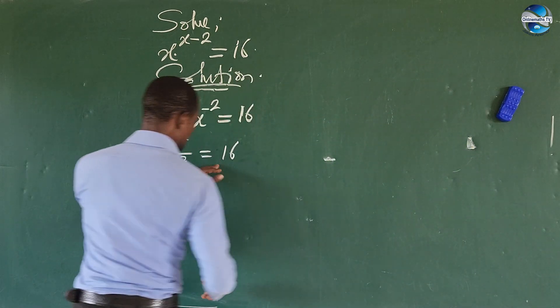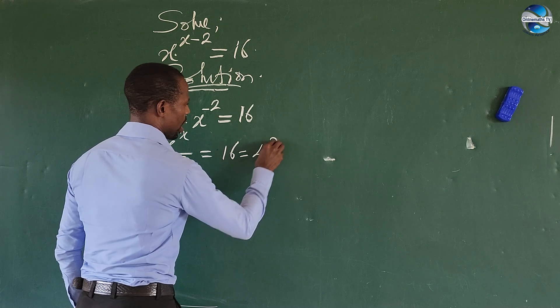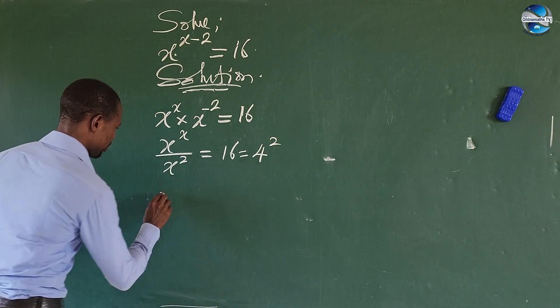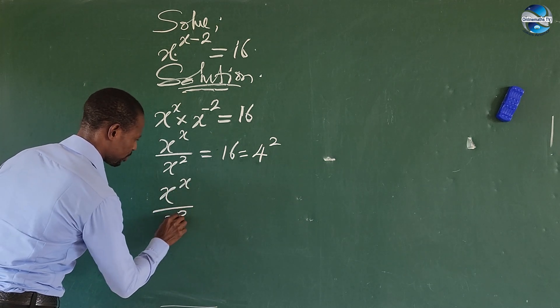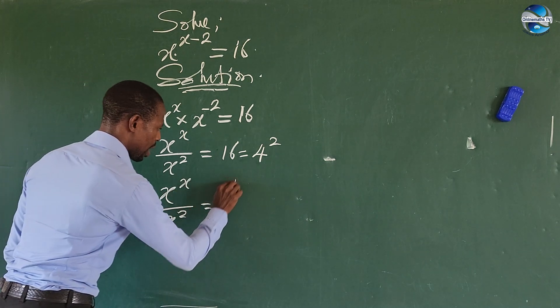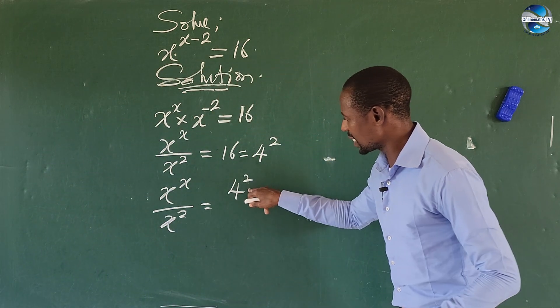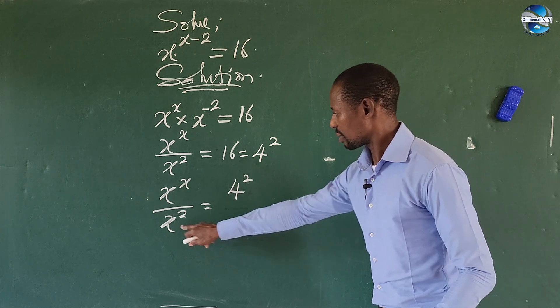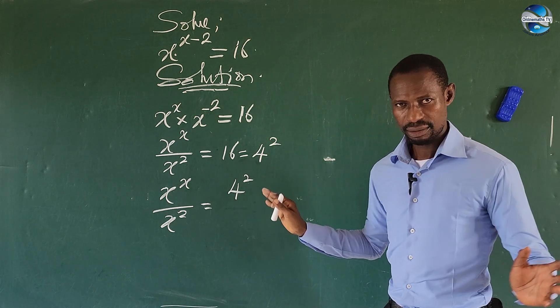Now remember our 16 could be written as 4 to the power of 2. So therefore we can have x to the power of x all over x to the power of 2, this is equal to 4 to the power of 2. Now this expression we have here should be at the bottom, so that x will take place of 4 and we have 2 here.